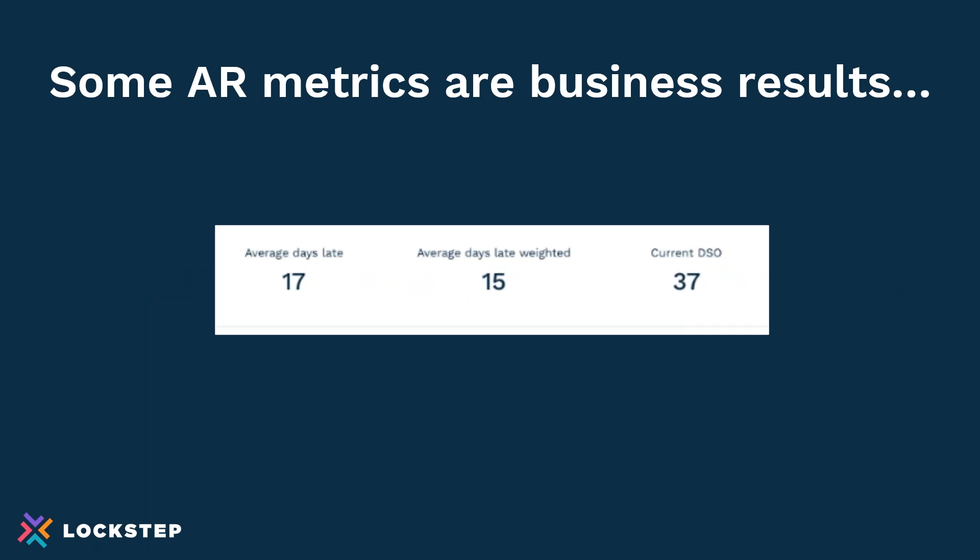We found three classes of AR metrics, each with its own managerial value and purpose. At the highest level, AR departments measure what we call business results — metrics such as working capital and DSO that represent the culmination of the AR effort. As much as managers want to talk about managing DSO, business results are ultimately unmanageable. If a manager could directly control DSO, then every AR department would meet its targets. You can tell your team we need to lower DSO, and they'd say no problem — but that doesn't happen.